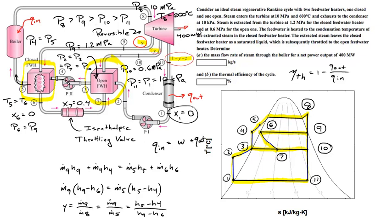Q_in can be found as M_dot_8 times (H8 minus H5). On a specific basis, little q_in equals H8 minus H5. The work coming out is in joules per kilogram of steam flowing through, so it's a lowercase w. Make these relationships and you should be able to tie it all together with mass and energy balances.